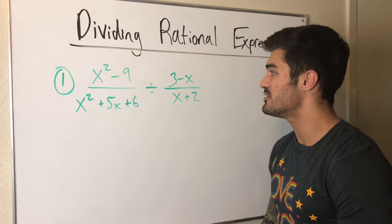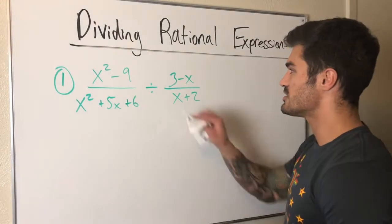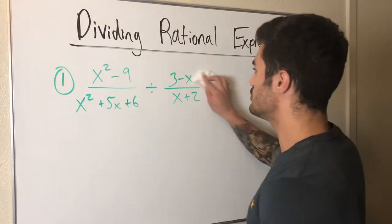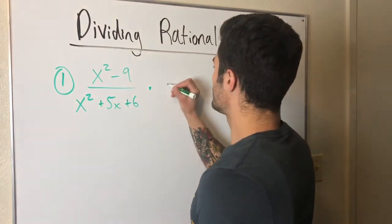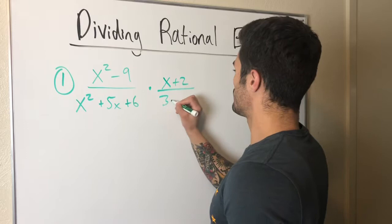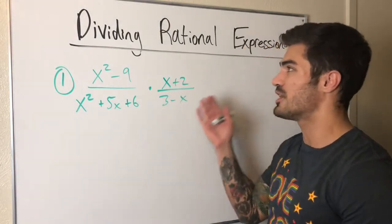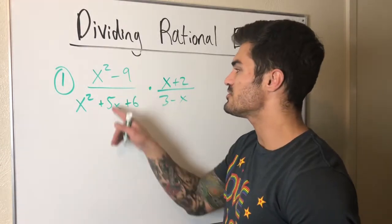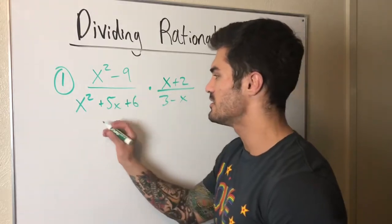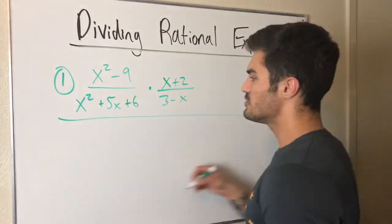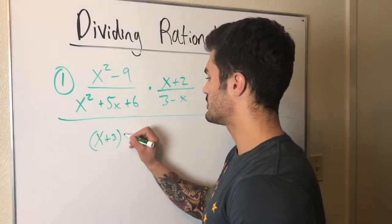So I'm going to rewrite this, flip it, and to save space I'll erase and write the multiplication here: (x+2) over (3-x) times (x+2) over (3-x). Now we're just multiplying rational expressions. I'm going to factor this completely — the top looks like a difference of squares, so that factors to (x-3)(x+3).